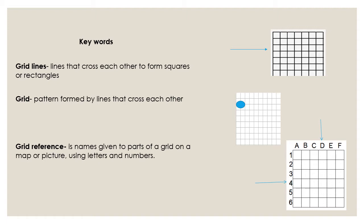On our left side we have our numbering. We start by numbering from the top block — from the top grid. So we say 1, 2, 3, 4, 5, and 6.